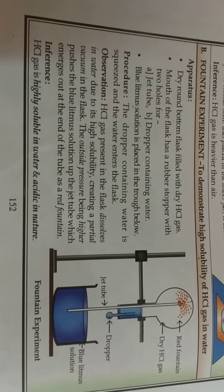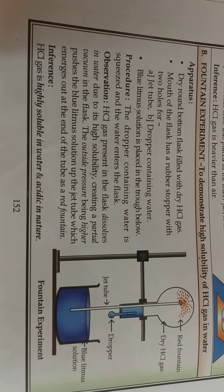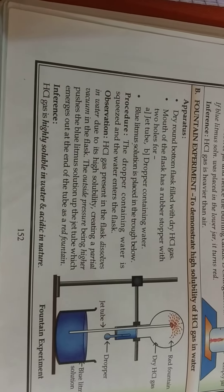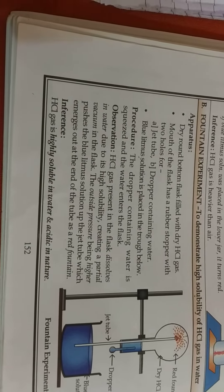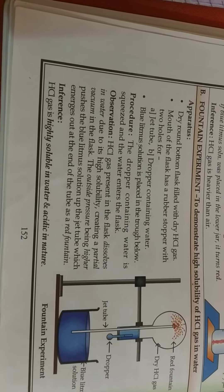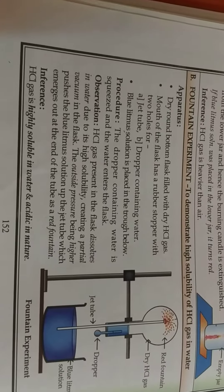In this beaker we have to take blue litmus solution, and in the round bottom flask we have to take dry HCl gas. That round bottom flask is sealed by a rubber cork which should have two holes.